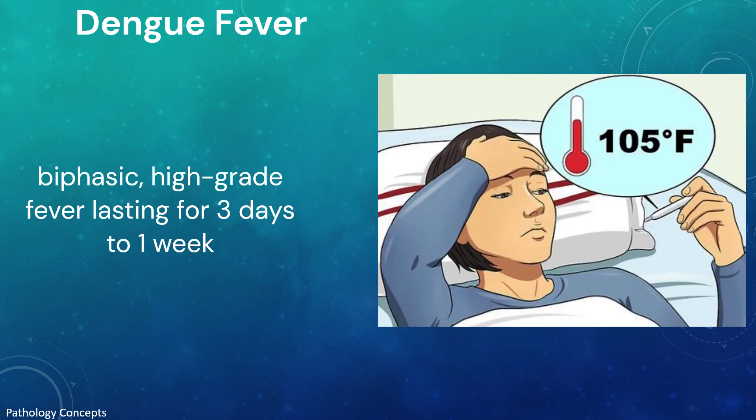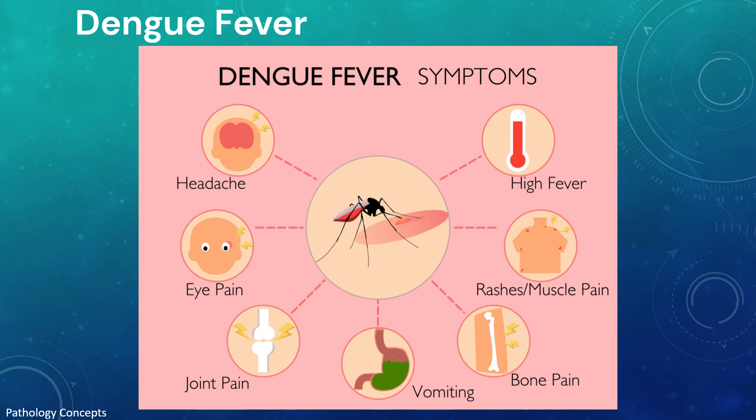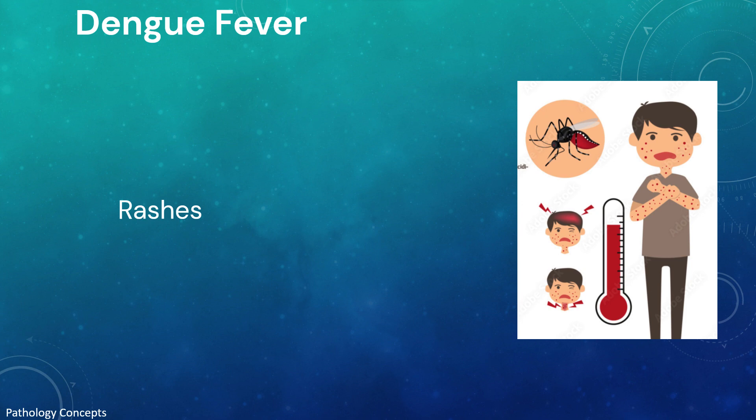Onset of symptoms is characterized by biphasic high-grade fever lasting three days to one week, severe headache mainly retro-orbital, lassitude, myalgia, and painful joints. Metallic taste, appetite loss, diarrhea, vomiting, and stomachache are other manifestations. Dengue is also known as breakbone fever because it is associated with myalgia and pain in joints.